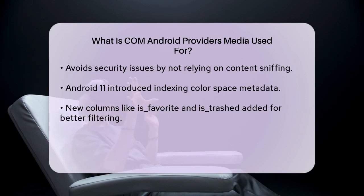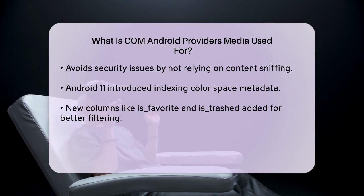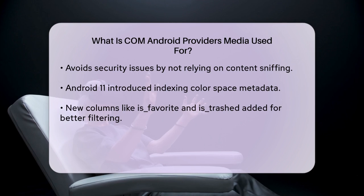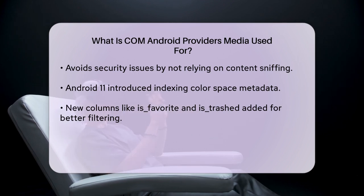In Android 11, the Media Provider Module got even better. It introduced new features like indexing color space metadata and adding new columns like is-favorite and is-trash to help gallery-style apps filter media more efficiently. It also enabled bulk modifications of multiple items with a single user dialog prompt.